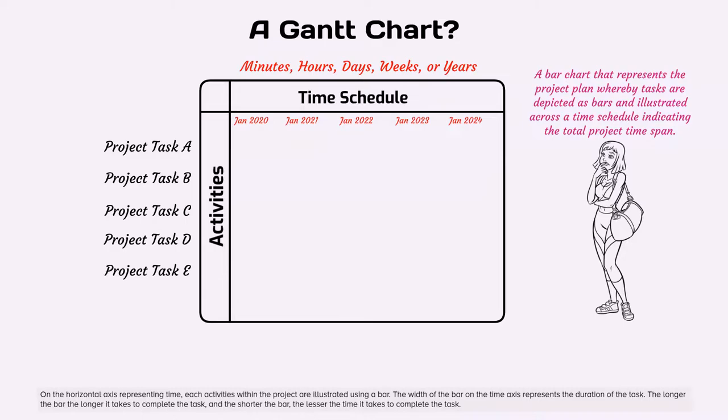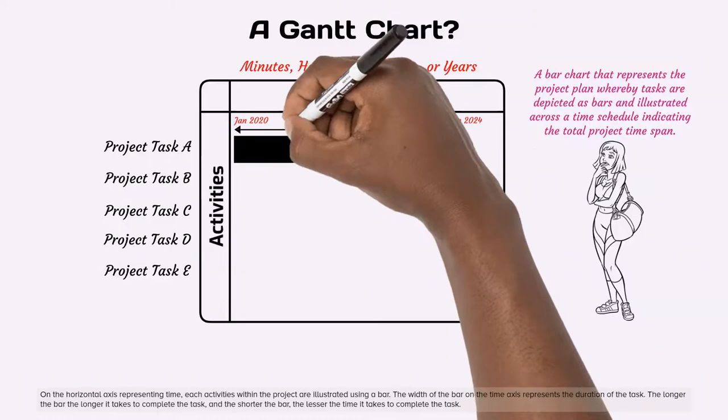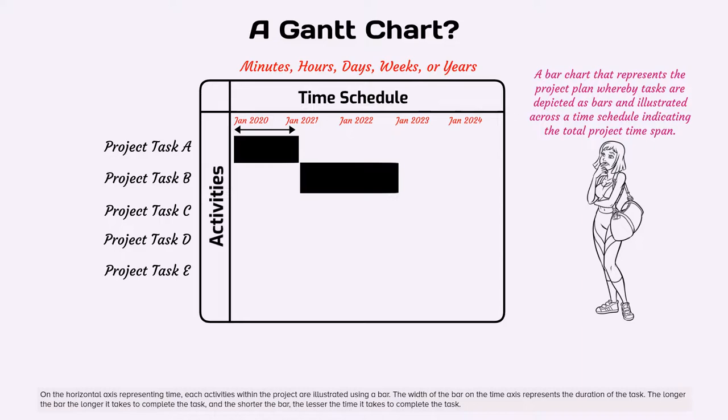On the horizontal axis representing time, each activity within the project is illustrated using a bar. The width of the bar on the time axis represents the duration of the task. The longer the bar the longer it takes to complete the task, and the shorter the bar, the lesser the time it takes to complete the task.